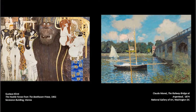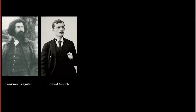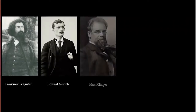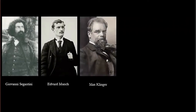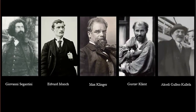In our overview of symbolist art today, we'll be focusing on the work of five artists: Giovanni Segantini from the Italian Alps, Edvard Munch from Norway, Max Klinger from Germany, Gustav Klimt from Austria, and Axeli Gallen-Kallela from Finland.